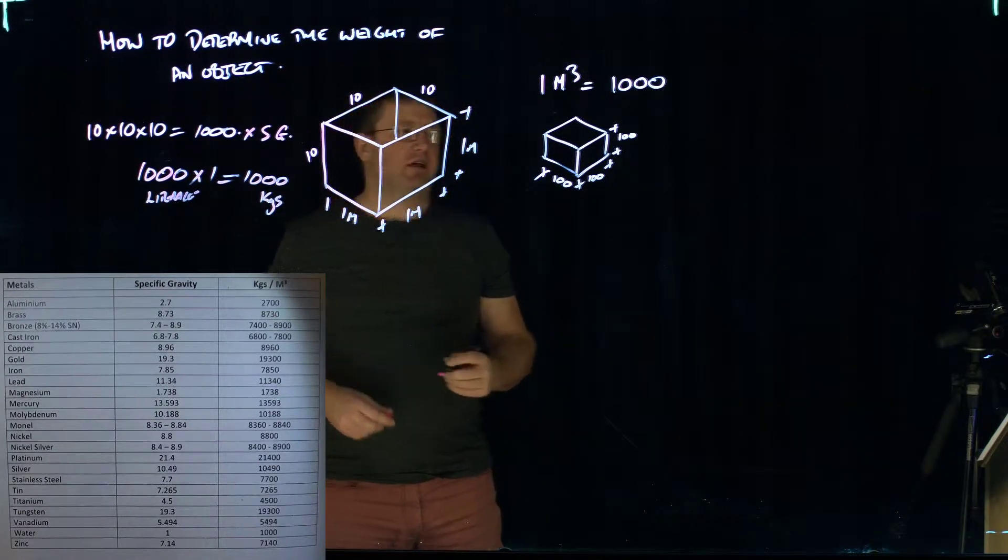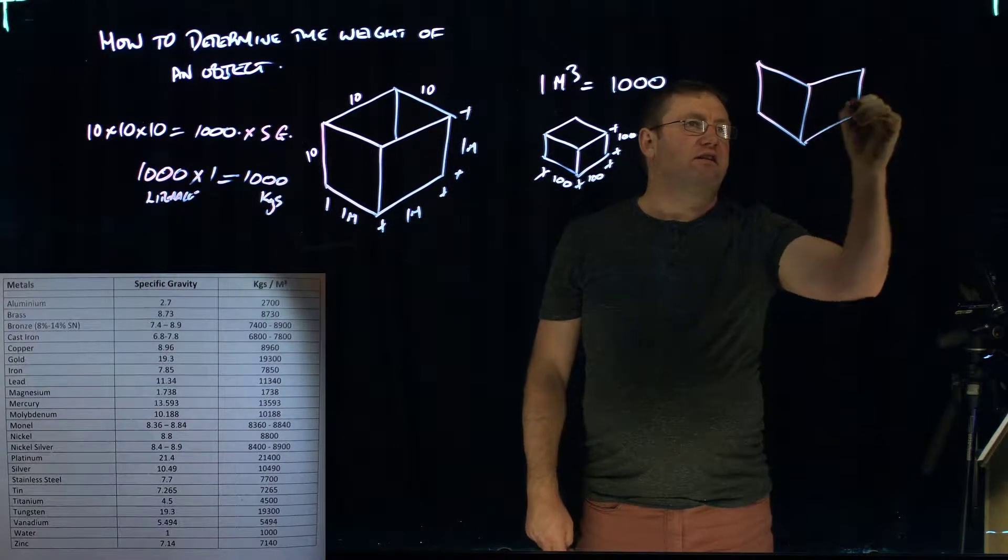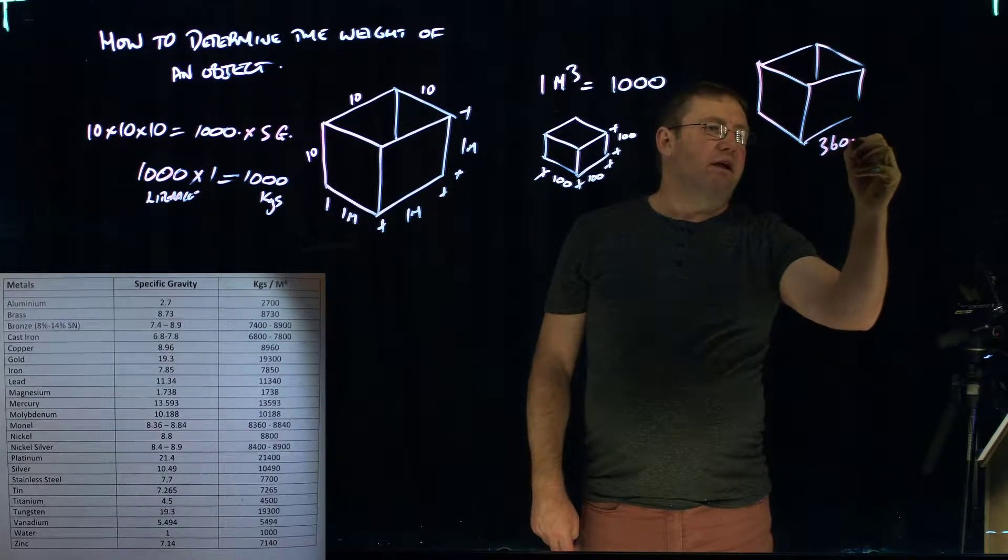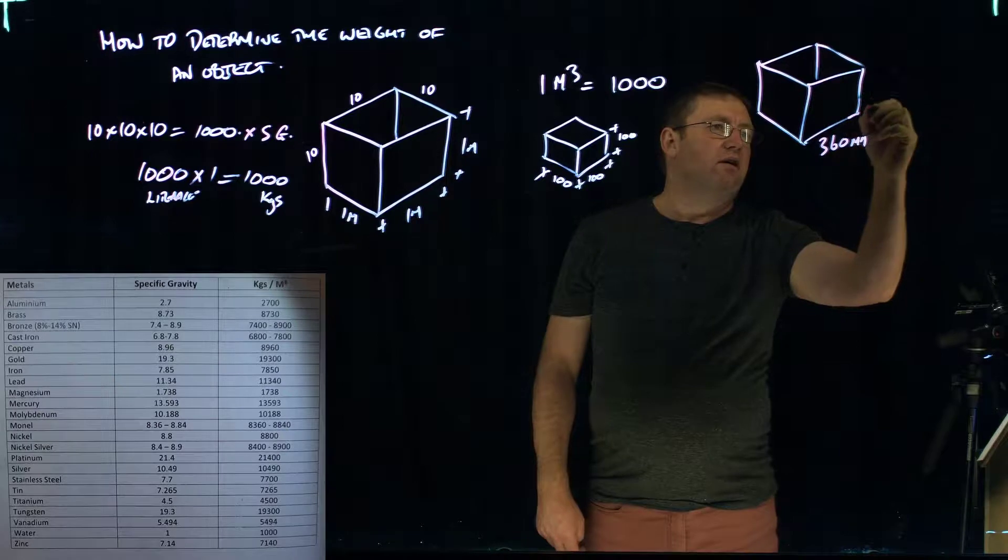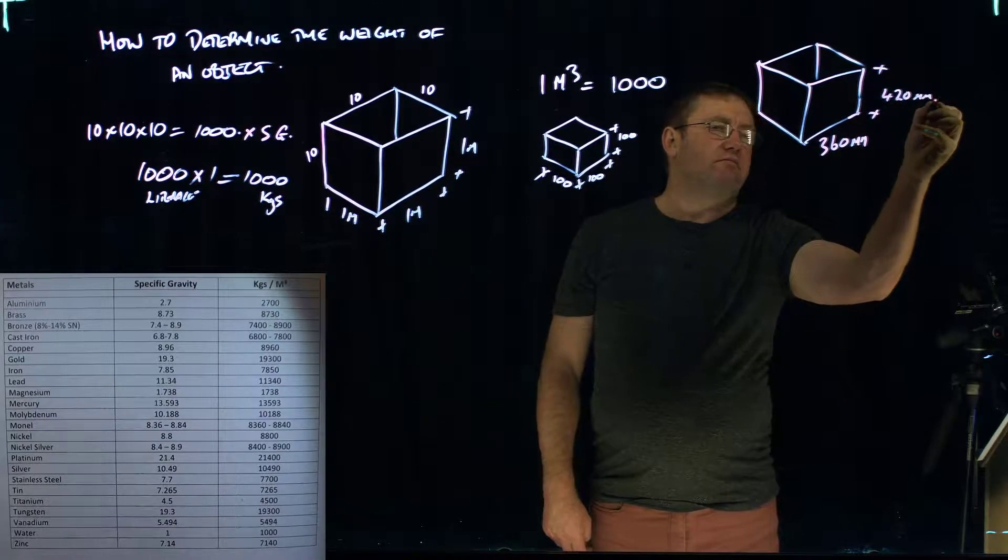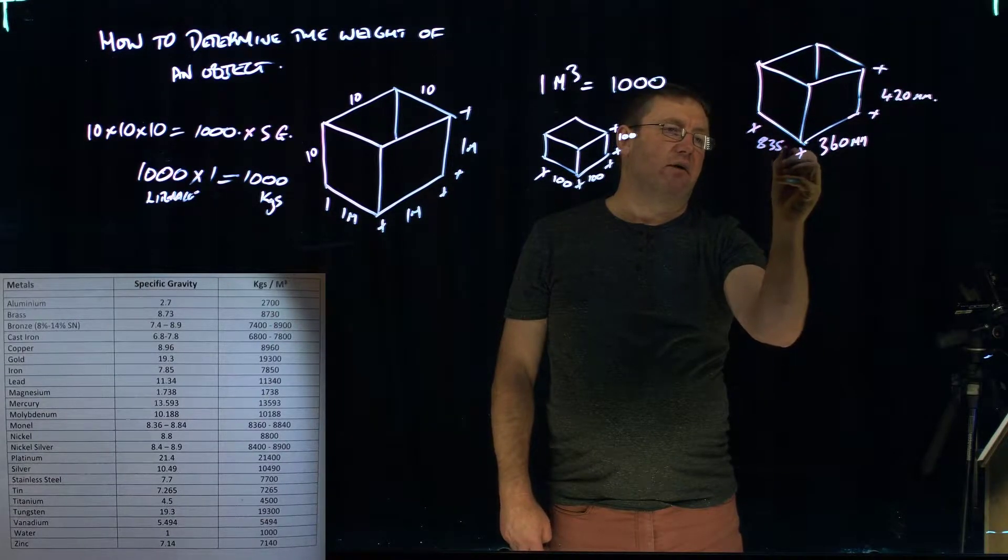So this was effectively the literage capacity times it by 1 because that's the specific gravity of water. It means that there's 1,000 kilograms in that tank there. So let's say that we have another tank. We're going to say that it's 360 millimeters by 420 millimeters by a depth of 835 millimeters.